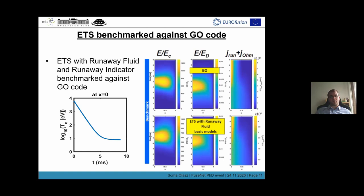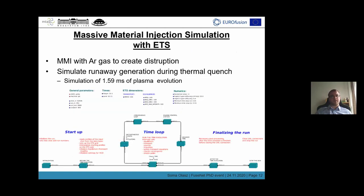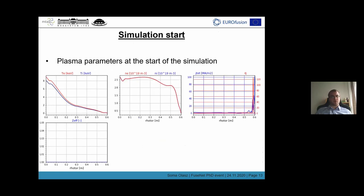Another scenario for which ETS was used recently is a massive material injection simulation, where argon impurity was injected into the plasma to create a disruption. During the thermal quench phase of this disruption, the runaway electron generation was calculated. In the remaining slides, I'm going to show you the main plasma profiles coming from this simulation.